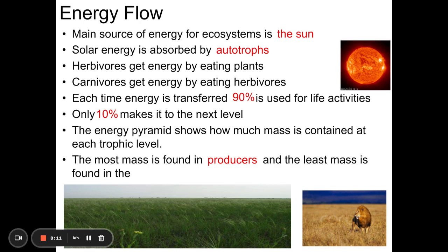That should make sense when you think about the top carnivores: lions, grizzly bears, great white sharks, alligators. They don't live in large groups. There's not a school of sharks or dozens of lions together — they're pretty rare. That's because they are at the top of the food chain, and it takes a lot of energy to support them. So the least amount of mass and energy is always found in those top carnivores.